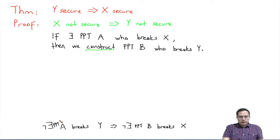When you think about it, if there were such an algorithm that breaks X, then through this proof, through this reduction, we would immediately have an algorithm that breaks Y.